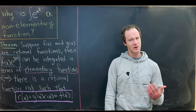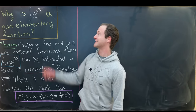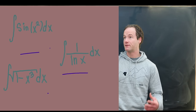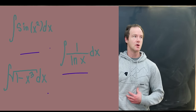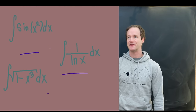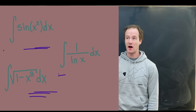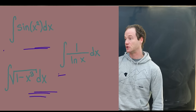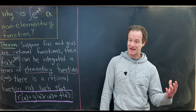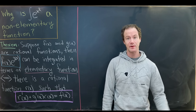Before we look at this theorem, I want to point out there are some other common non-elementary functions. Some other functions related to the antiderivative of e to the x squared would be the antiderivative of sine of x squared, or the antiderivative of cosine of x squared. We also have the antiderivative of 1 over natural log, or the antiderivative of 1 minus x cubed. Those antiderivatives cannot be written in terms of commonly known elementary functions.